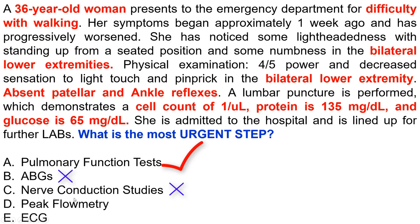Peak flowmetry measures expiratory volume — expiration is not our problem. In Guillain-Barré syndrome, inspiration is an active phenomenon; if the patient is unable to perform inspiration, that leads to respiratory failure. Peak flowmetry is useful for expiratory problems such as in COPD, but for inspiration problems, pulmonary function test is needed. ECG is not the answer since the heart is not usually involved — the diaphragm is. So the best answer is pulmonary function test. If the question asked for the most specific test, the answer would change to nerve conduction studies.